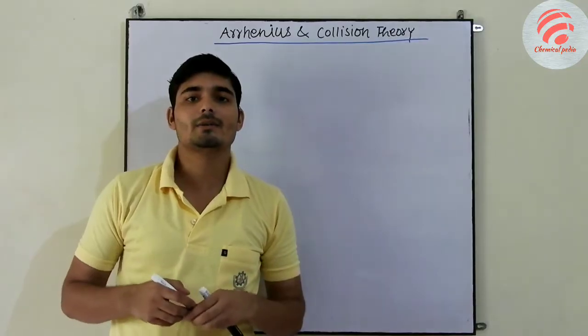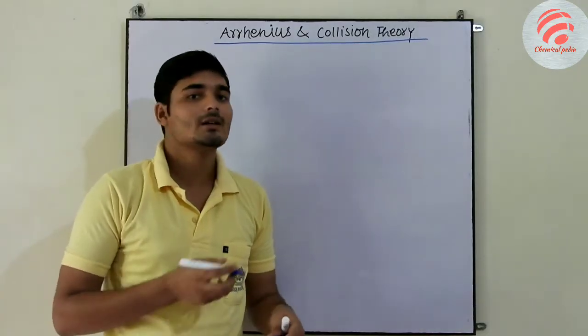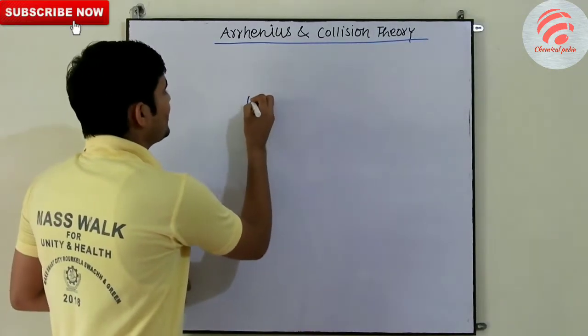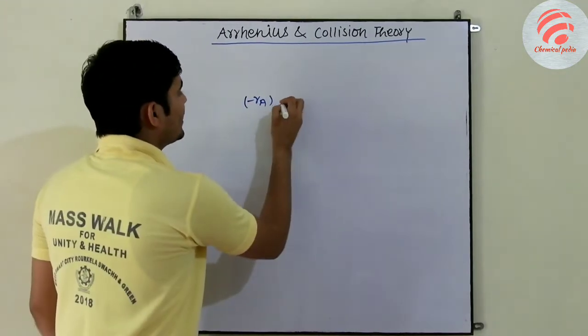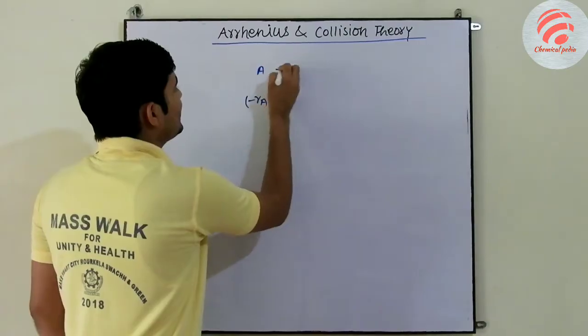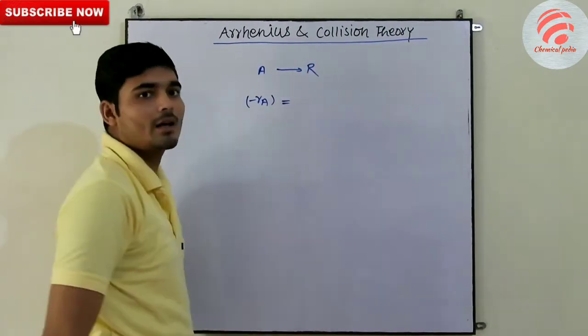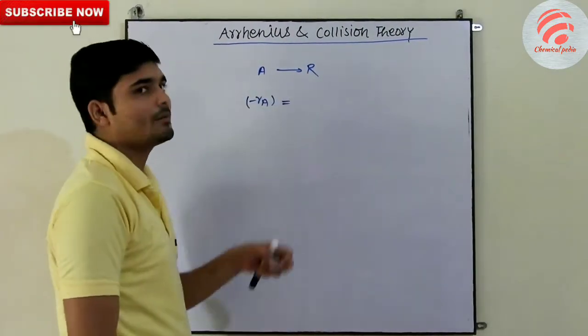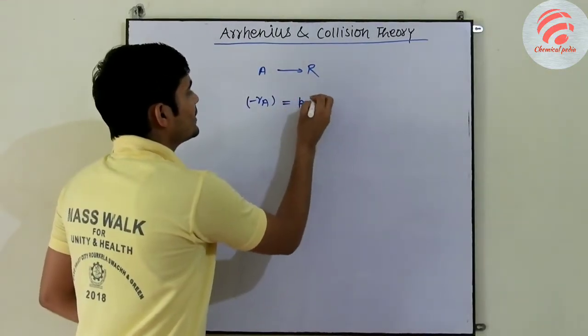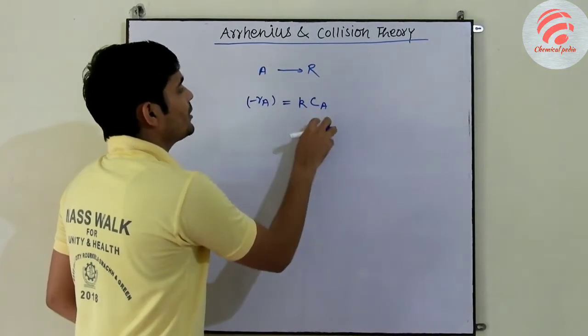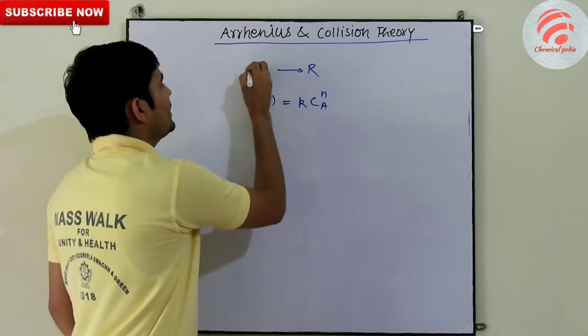In chemical reaction engineering, we know that the rate of reaction. If we call the reaction A, then we call the product R. The rate of reaction, minus rA is equal to k times CA, C of A component to the power n.